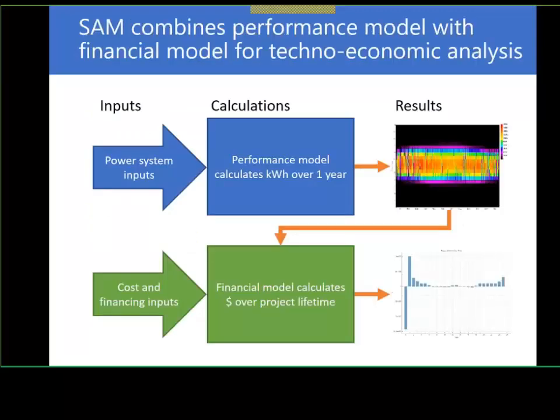This diagram shows how the performance model and the financial model work together, making SAM what we call a techno-economic analysis model. You provide inputs to the performance model, it calculates the kilowatt hours produced by the system, and then inputs you provide to the financial model get combined with those kilowatt hours. Out comes the cash flow, from which we can calculate metrics like net present value, levelized cost of energy, and so on.